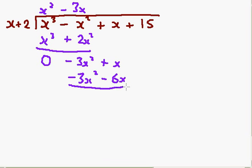Draw a line underneath. Minus 3x squared take away minus 3x squared is 0. x take away minus 6x is plus 7x. OK, and I bring the 15 down. For convenience sake.